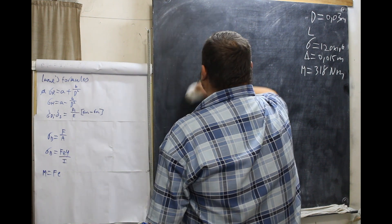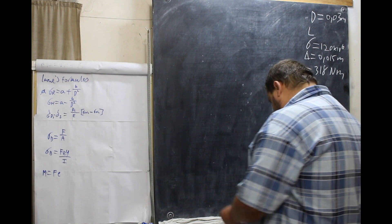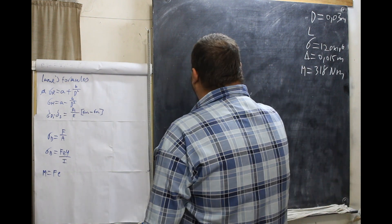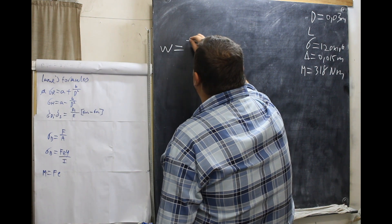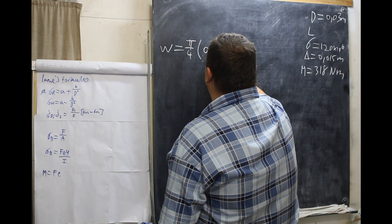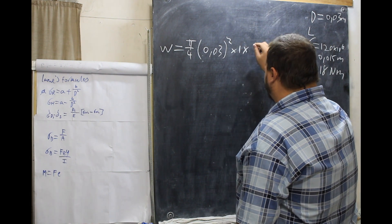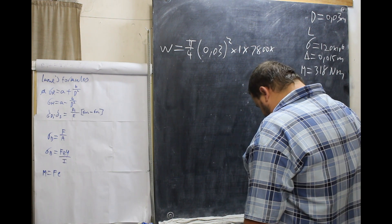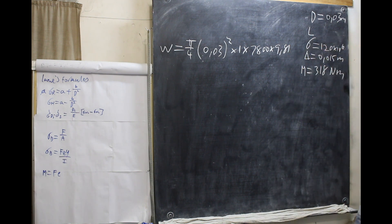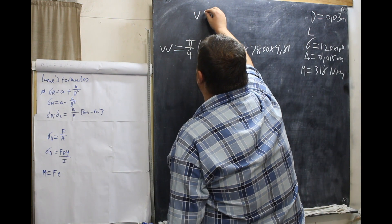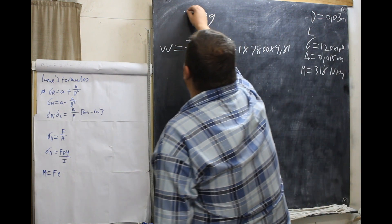Now, we are going to use density and everything. Now, the weight is pi over 4 times 0.03 squared times 1 times 7,800 times 9.81. So, what we have basically is our volume times density times gravity. That will equal weight.